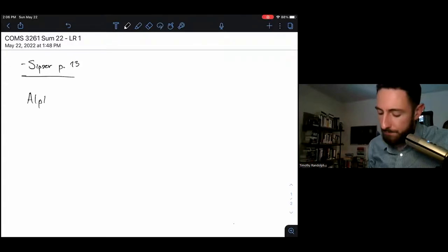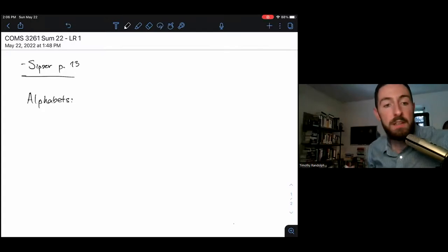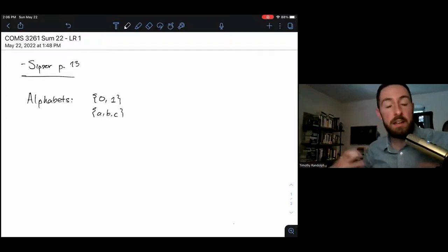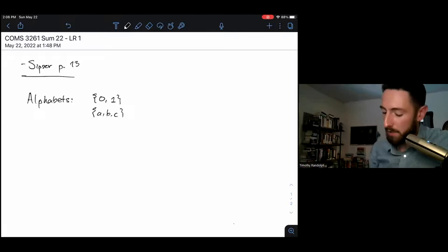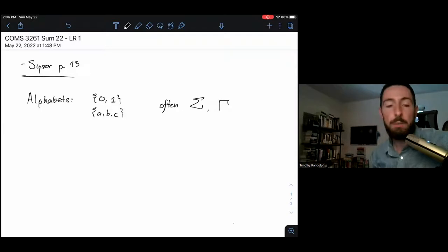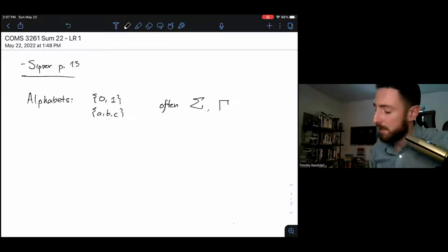First off, an alphabet is a non-empty finite set of symbols. Examples of alphabets include {0,1}, that is the binary alphabet. You might have an alphabet like {A,B,C} that contains letters as your symbols. Often we'll use the symbols capital sigma or capital gamma to talk about alphabets. This is pure convention.